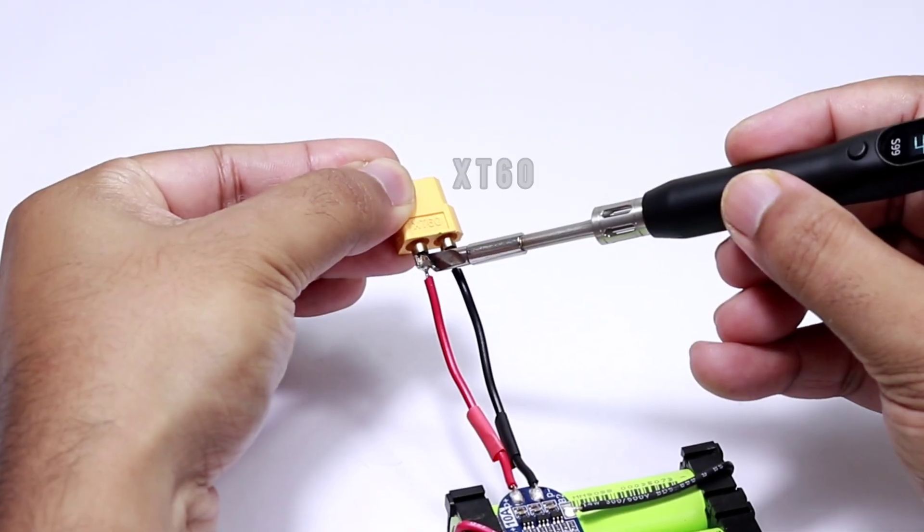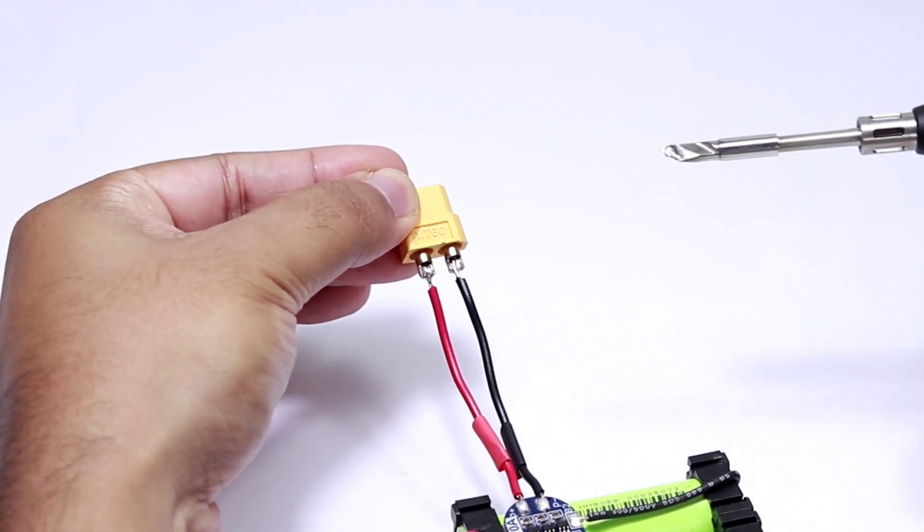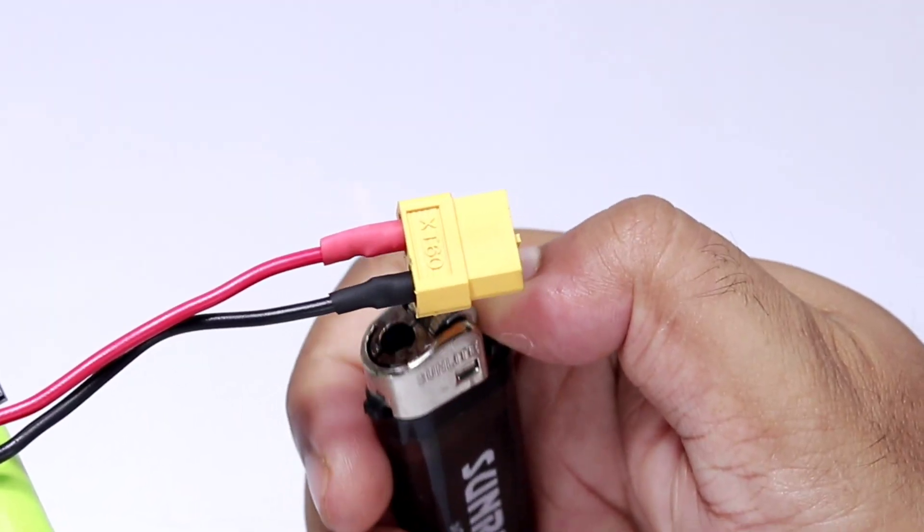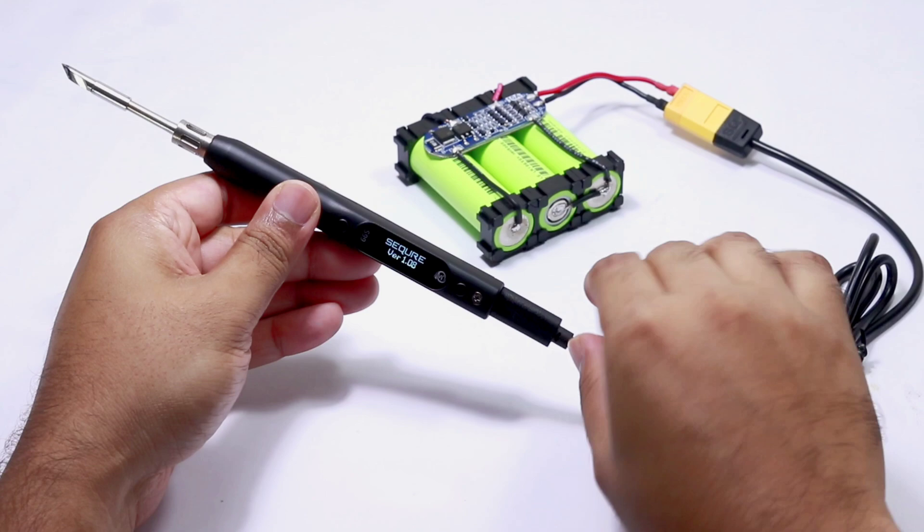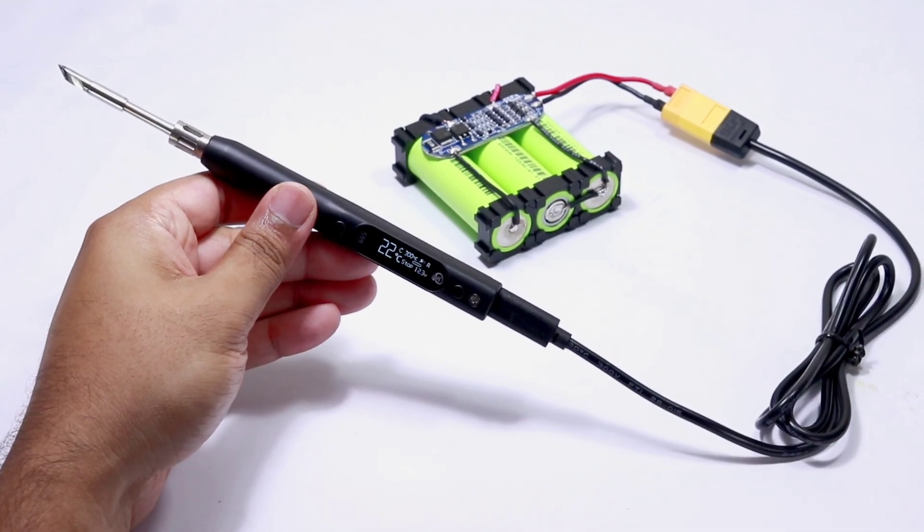I have added the XT60 connector with the battery pack so I can use it to power the soldering iron with the given power connector. Again there is nothing burning so the idea worked well.